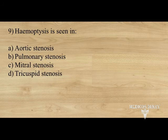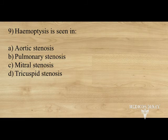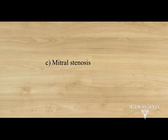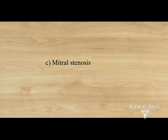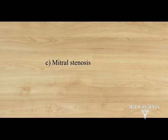Hemoptysis is seen in: A. aortic stenosis, B. pulmonary stenosis, C. mitral stenosis, D. tricuspid stenosis. Answer: option C, mitral stenosis. Pulmonary congestion in mitral stenosis may cause cough and pulmonary hypertension, leading to hemoptysis. Because of mitral stenosis there is increased left atrial pressure, which causes back pressure in the pulmonary vascular bed, leading to pulmonary hypertension. This rise in pulmonary vascular pressure causes rupture of pulmonary-bronchial venous connections, giving rise to hemoptysis.